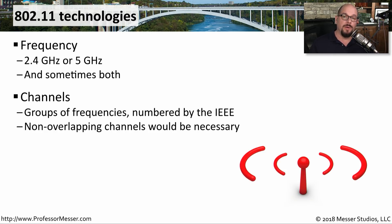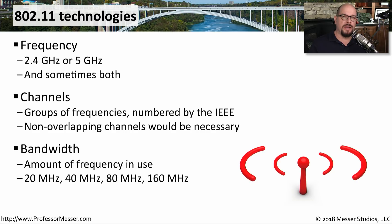If you're trying to make sure that multiple access points can communicate, you may want to choose channels that don't overlap with each other. Different 802.11 standards will use different bandwidths in these 2.4 and 5 gigahertz frequency ranges — this is the amount of frequency you're using at any particular time. I'll show you a graph that breaks out the differences in the standards and the different frequency ranges available with 2.4 gigahertz and 5 gigahertz.